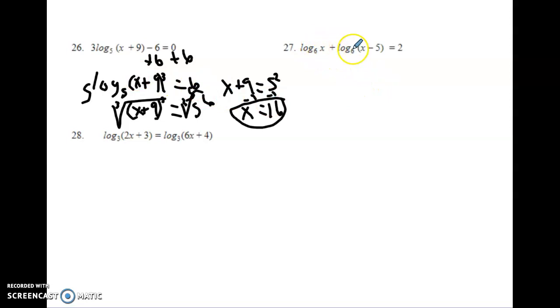Number 27. We have two logs, which is kind of a mess, so we want to combine those together. This is where the properties come in handy. We're going to condense them together, and because they are being added, we're going to multiply the numbers, so you have log base 6 of x times x minus 5. That's where the multiplication comes from, and that equals 2. Now, to get rid of this log base 6, I raise it to a power of 6, and the log 6 cancels out. I'm going to go ahead and distribute that. I have x squared minus 5x equals 36.